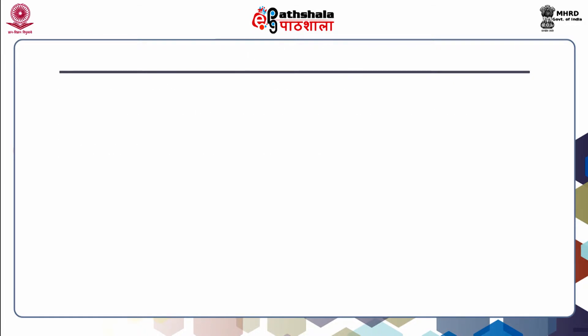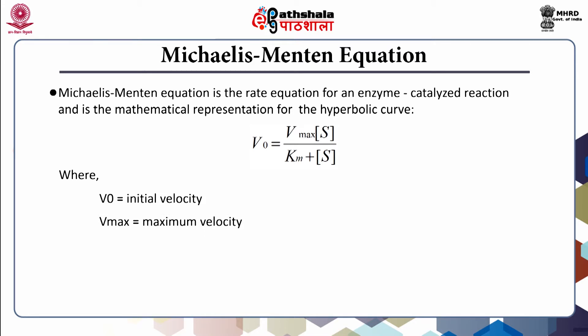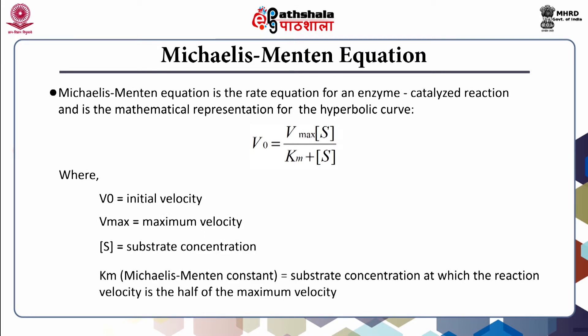Now we will see the Michaelis-Menten equation. The Michaelis-Menten equation is the rate equation for an enzyme-catalyzed reaction and is a mathematical representation for the hyperbolic curve. In the equation, v₀ is initial velocity, Vmax is maximum velocity, [S] denotes substrate concentration, and Km is the substrate concentration at which the reaction velocity is half of the maximum velocity.